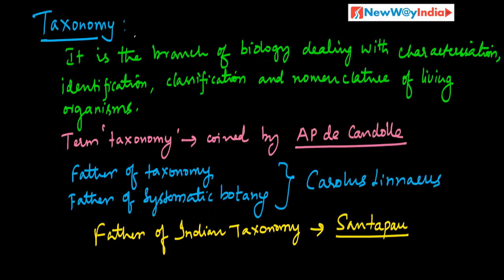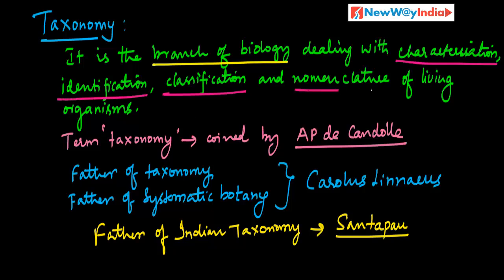What is Taxonomy? It is the branch of biology dealing with characterization, identification, classification, and nomenclature of living organisms. It actually involves four steps: characterization, identification, classification, and nomenclature of living organisms.